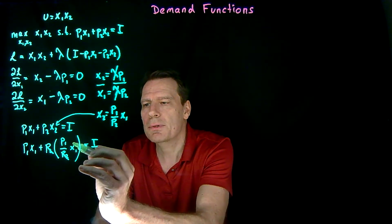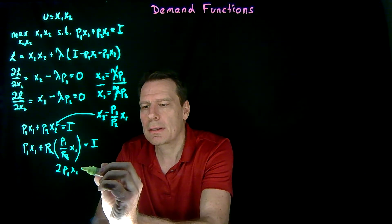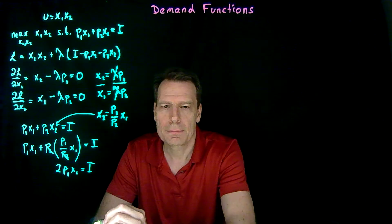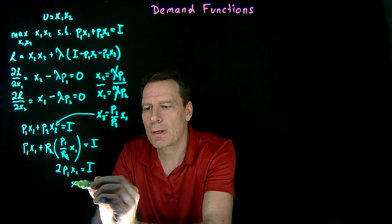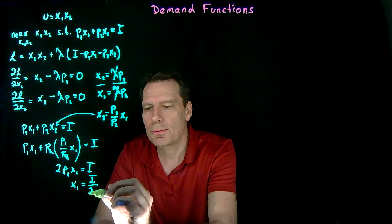And we just get 2 times p1 x1 is equal to i. Dividing through by 2p1, we get x1 is equal to i divided by 2p1.